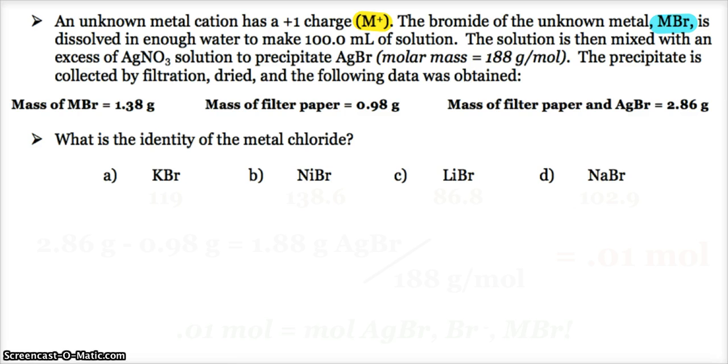So this solution is then mixed with an excess of silver nitrate to precipitate silver bromide, and they give us the molar mass. Then, like we did in lab, the precipitate is collected by filtration, dried,